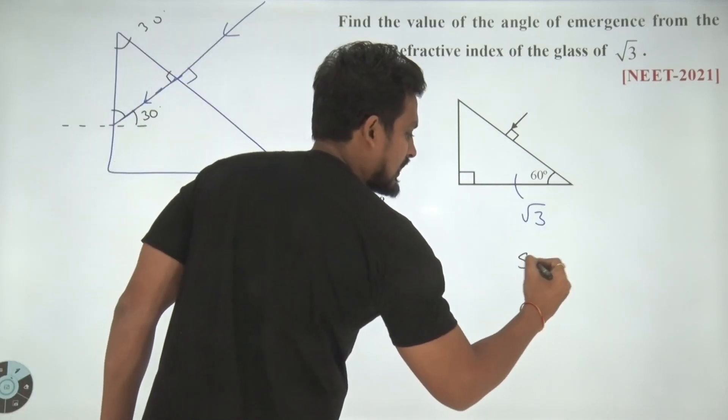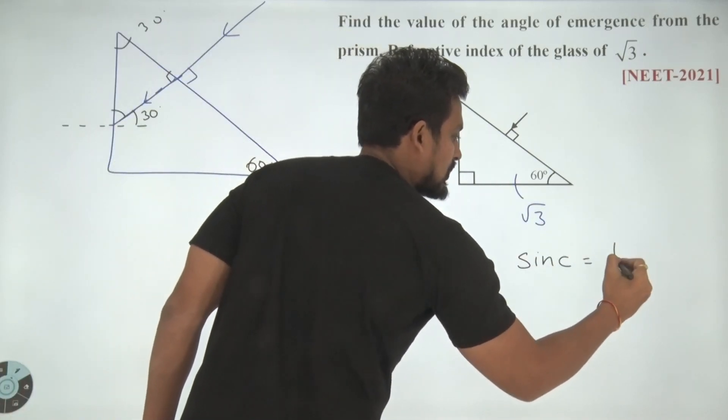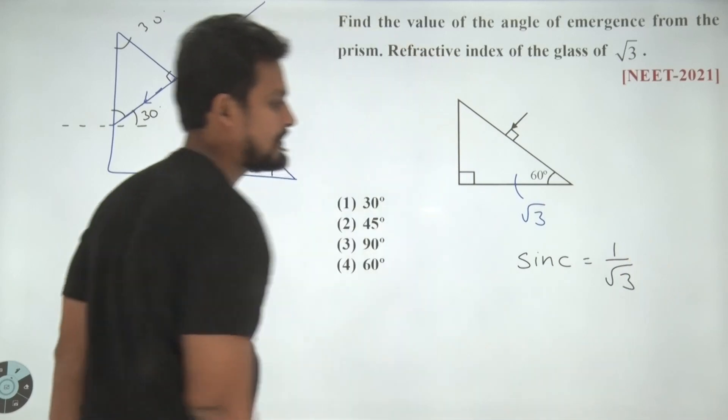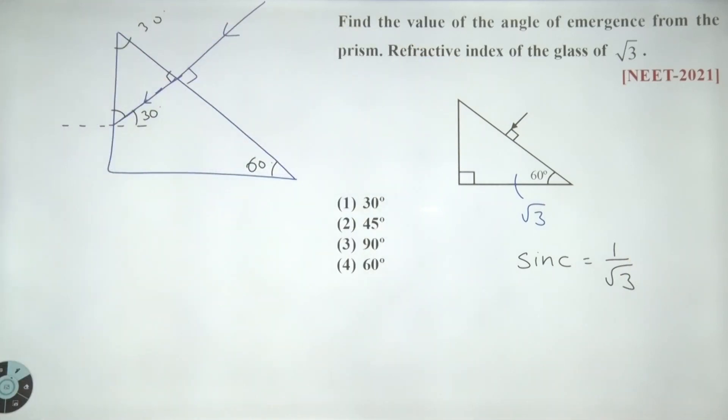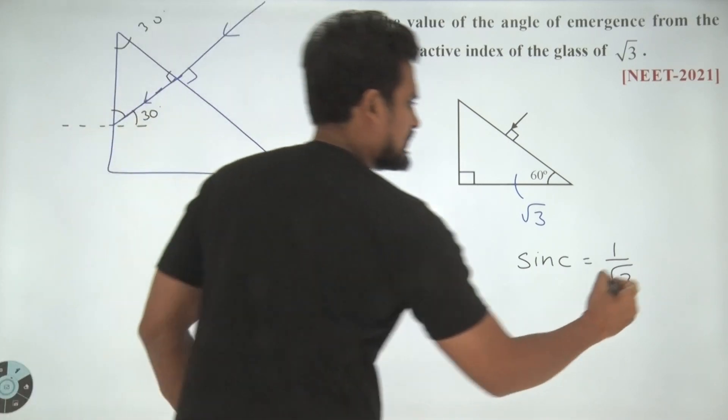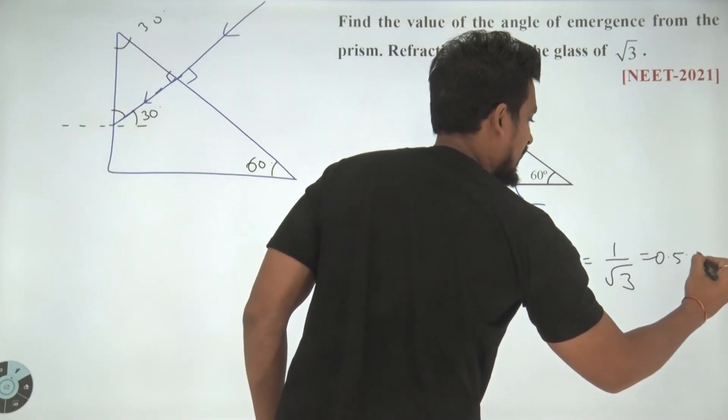Now, tell me one thing. What will be the critical angle for this? Sin critical would be equal to 1 by root 3. Yes or no?